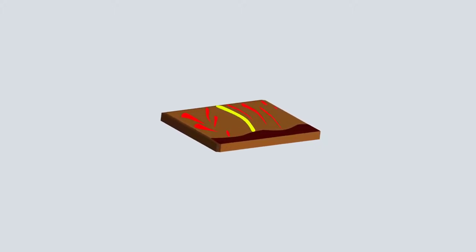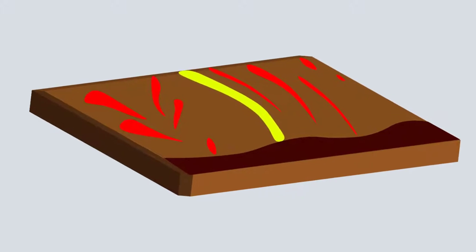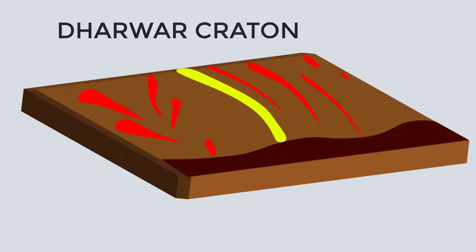The most ancient cratonic nucleus of the Indian continent was formed about 3600 million years ago. This nuclear growth led to the formation of what we know today as Dharwar Craton.